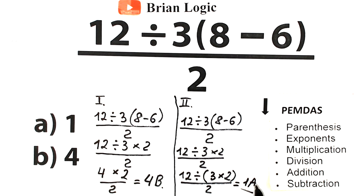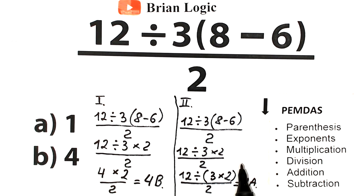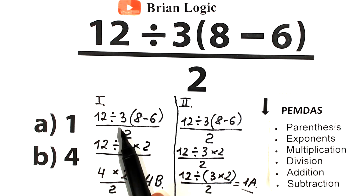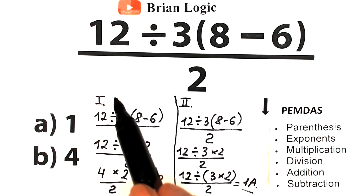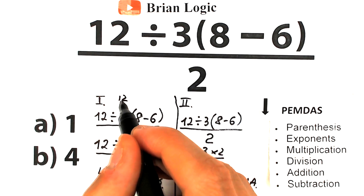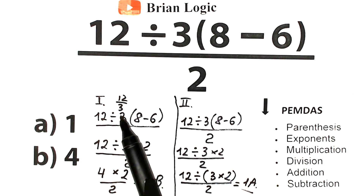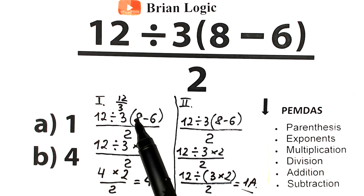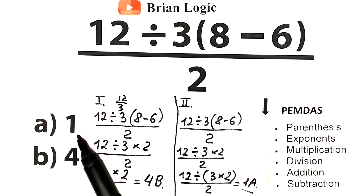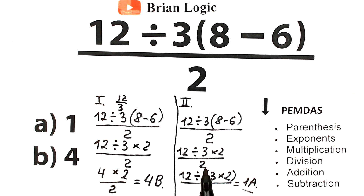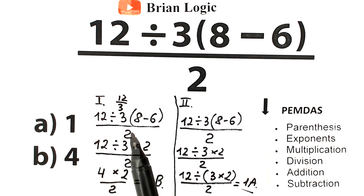Some students point out that we could write 12 divided by 3 as a fraction — 12 over 3. But it changes nothing. Whether we write 12 over 3 or 12 ÷ 3, we get 4, and then we multiply by 2 from the parentheses. Whether written as a fraction or not, the correct answer is always 4.